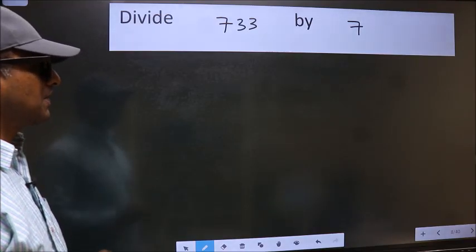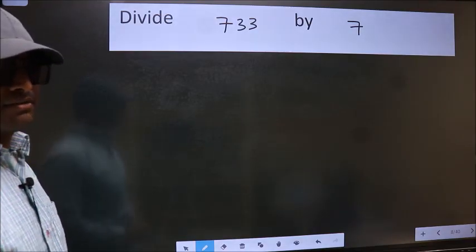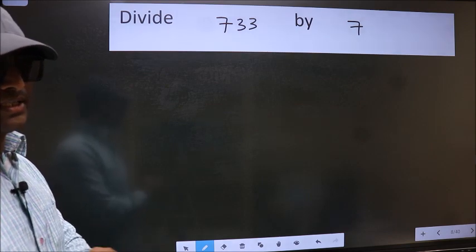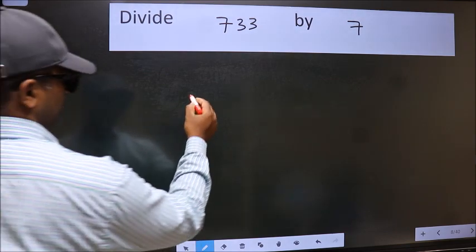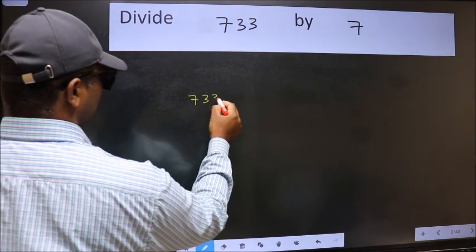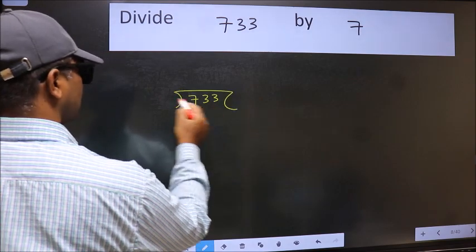Divide 733 by 7. To do this division, we should frame it in this way. 733 here and 7 here.